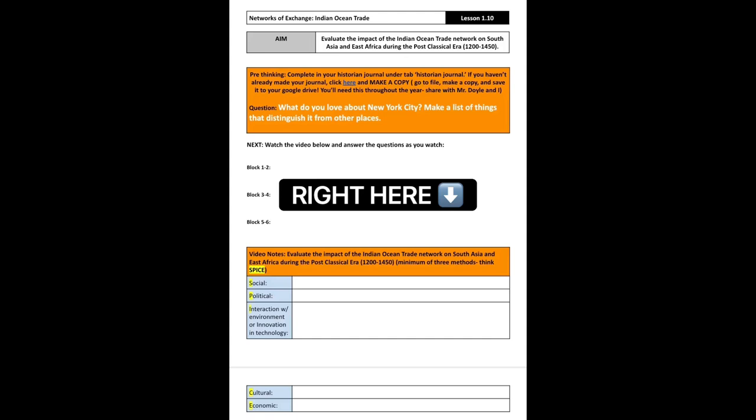So make sure you're taking notes in your assignment, Unit 1, Lesson 10. You'll take notes in that SPICE chart, and then you'll copy and paste that SPICE chart into your historian journal lecture notes tab. So make sure that's what you're doing, paying attention to those SPICE impacts, and taking notes in your Unit 1, Lesson 10.